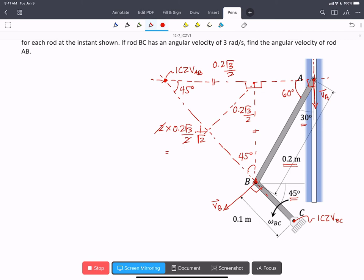And that can simplify. We're going to cross out those 2's. We get 0.2 root 3 over root 2. That's the length of this side.